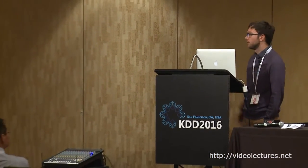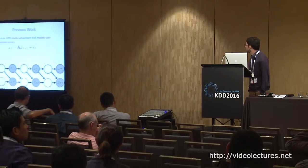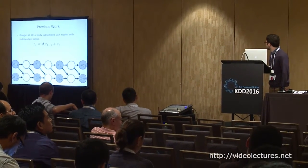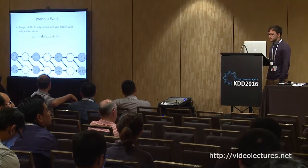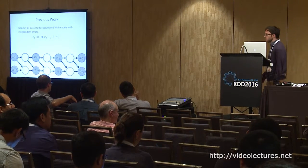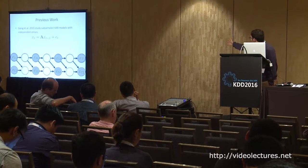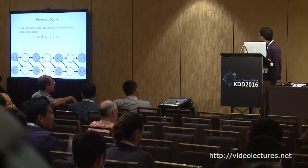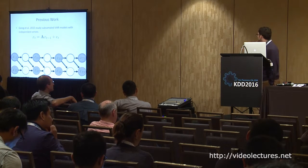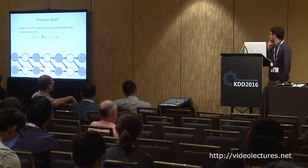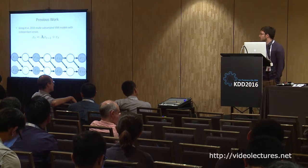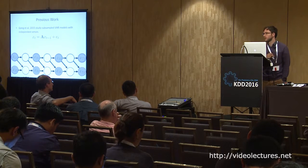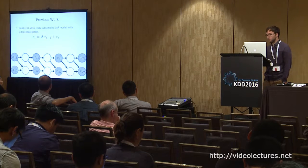Our work builds on prior work by Gong et al. in 2015, who study subsampled VAR models with independent errors. The basic model is a linear vector autoregressive model of order 1: X_t equals A times X_{t-1} plus some error term. The causal interactions occur only across time steps, encoded by the matrix A. A key assumption is that the errors are independent, so they cannot capture causal structure happening instantaneously within a time point.